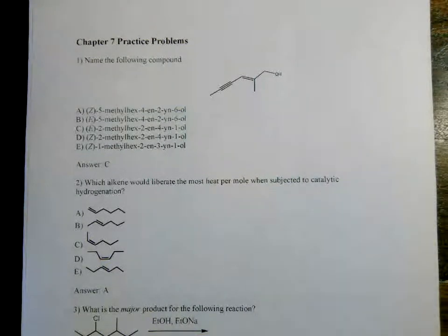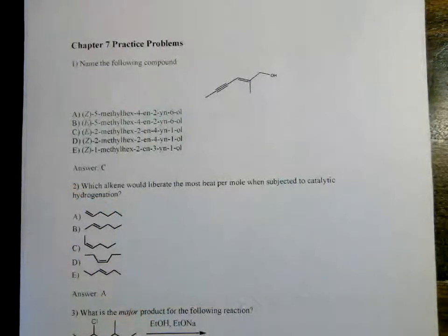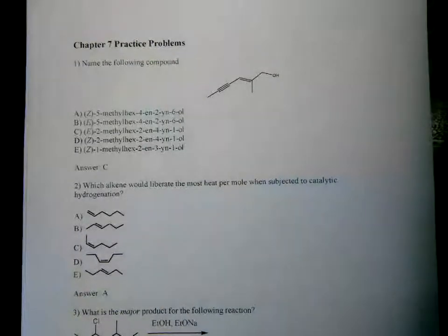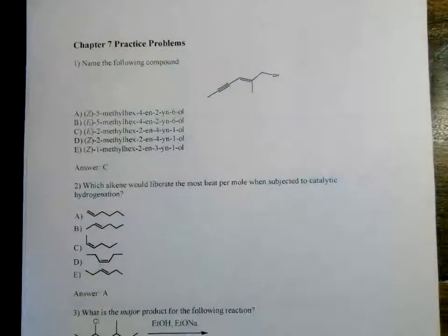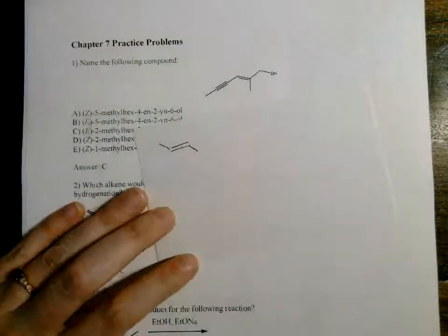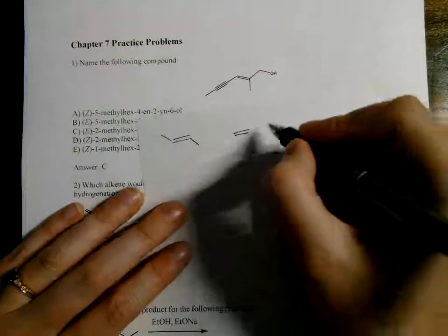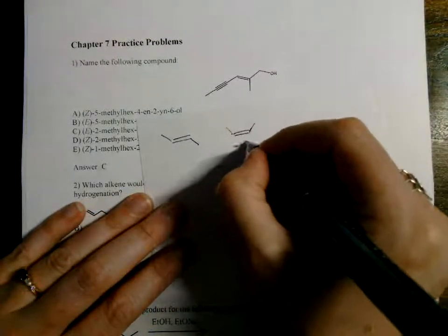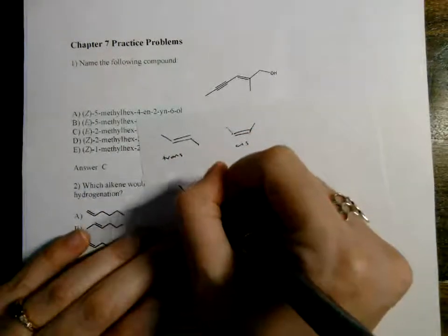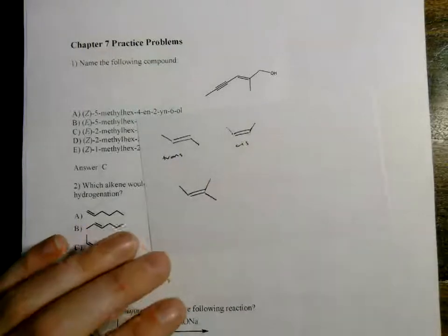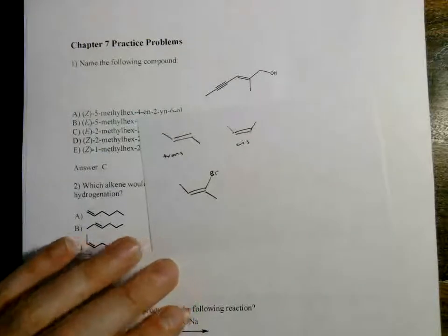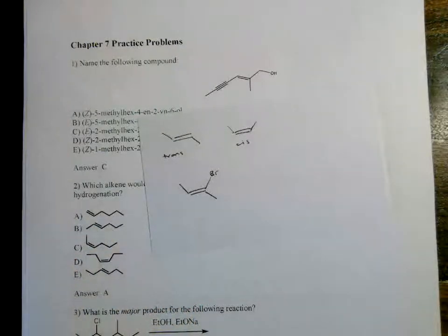For question one, this is E/Z nomenclature. If you ever have a structure that has two clearly higher priority groups on either side, you know that these are cis and trans. But what happens if you have something more complex? Is it cis or trans? That gets a lot more complicated, so we use E and Z nomenclature.